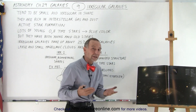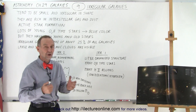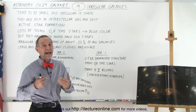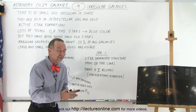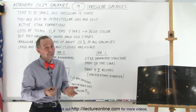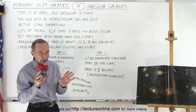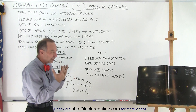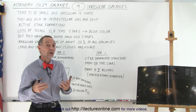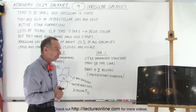Two of the famous irregular galaxies are the Large and Small Magellanic Clouds, which are satellite galaxies of our own Milky Way, about 160,000 to 170,000 light years from us. They're actually visible with the naked eye from the southern hemisphere — they look like fuzzy little patches, like clouds. With the naked eye you can't see the individual stars, but with a relatively small telescope you can see more detail in the Large and Small Magellanic Clouds.